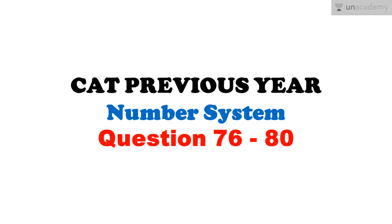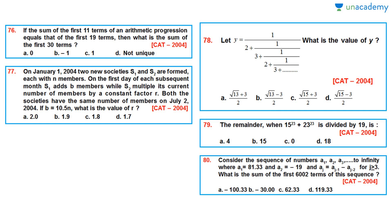Question 76: The sum of the first 11 terms of an arithmetic progression equals that of the first 19 terms — then what is the sum of the first 30 terms? Question 77: On January 1, 2004, two new societies S1 and S2 are formed, each with n members. On the first day of each subsequent month, S1 adds b members while S2 multiplies its current number of members by a constant factor r. Both societies have the same number of members on July 2, 2004. If b = 10.5n, what is the value of r?